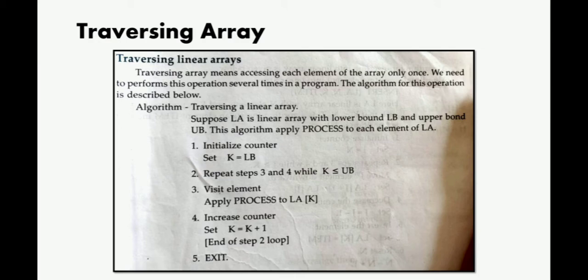The algorithm: first step, initialize a counter. We have to use a loop because each and every memory location you have to access, so every time that address should change. First, take one variable K and store the lower bound address in that variable. So K equals lower bound address. Suppose lower bound is zero, so K starts from zero. Now you have to visit each element - apply the process to LA[K].